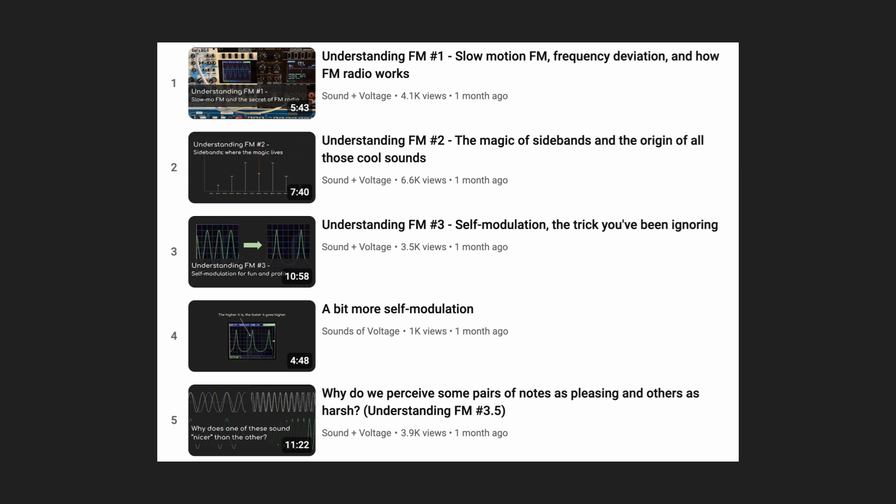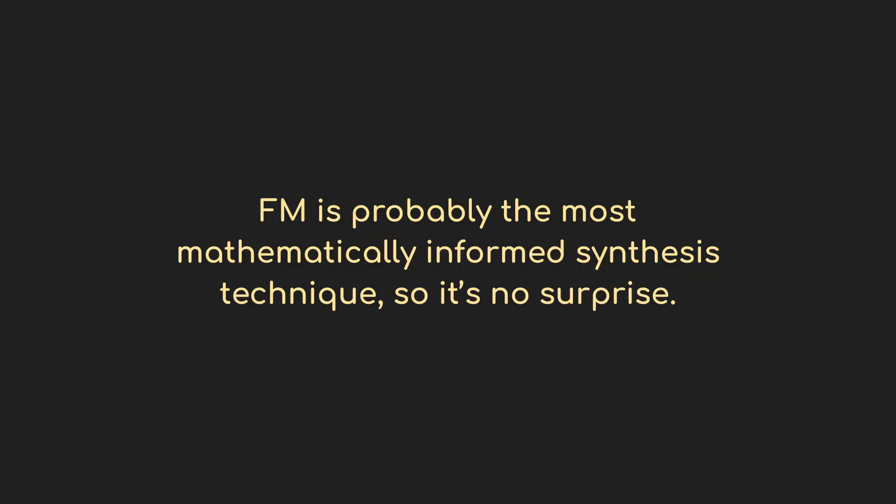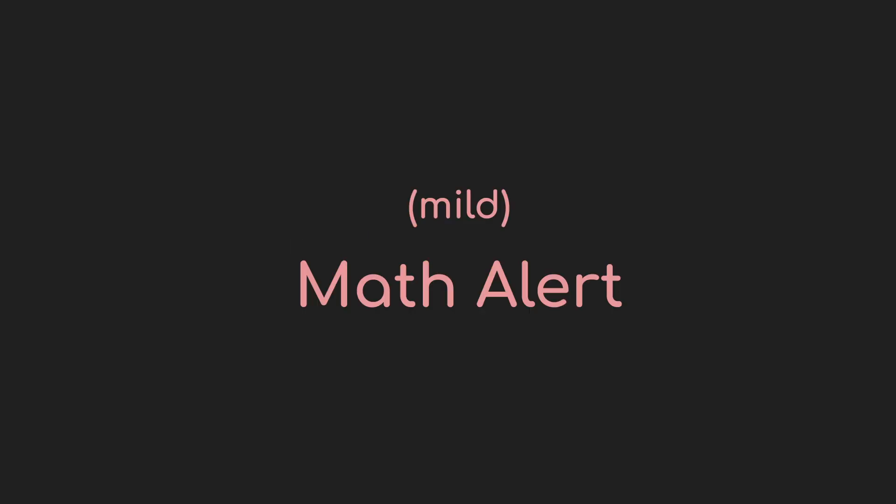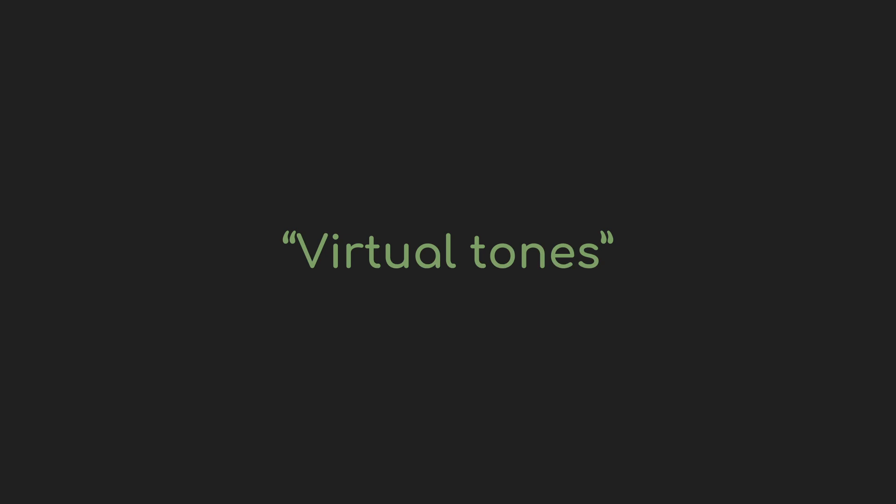Throughout the series I've been fairly specific about the frequency values I pick for the carrier and modulator. That's because FM is really sensitive to those values — or more specifically, it's sensitive to the ratio between those values. In this video we're going to dig into why and how these values matter in terms of the sets of sidebands they create and how it relates to a harmonic series. And we're going to start with something that was a bit of a surprise when I saw it: the concept of a virtual tone.